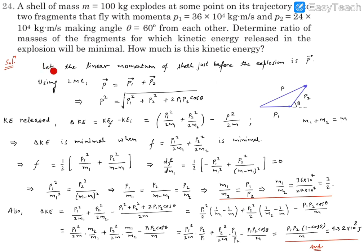Let the linear momentum of the shell just before the explosion be P. Conservation of linear momentum gives P = P1 vector + P2 vector. Using the triangular law of vector addition, the magnitude is P = square root of P1 squared plus P2 squared plus 2P1P2 cos theta. We can also square both sides to work with this.